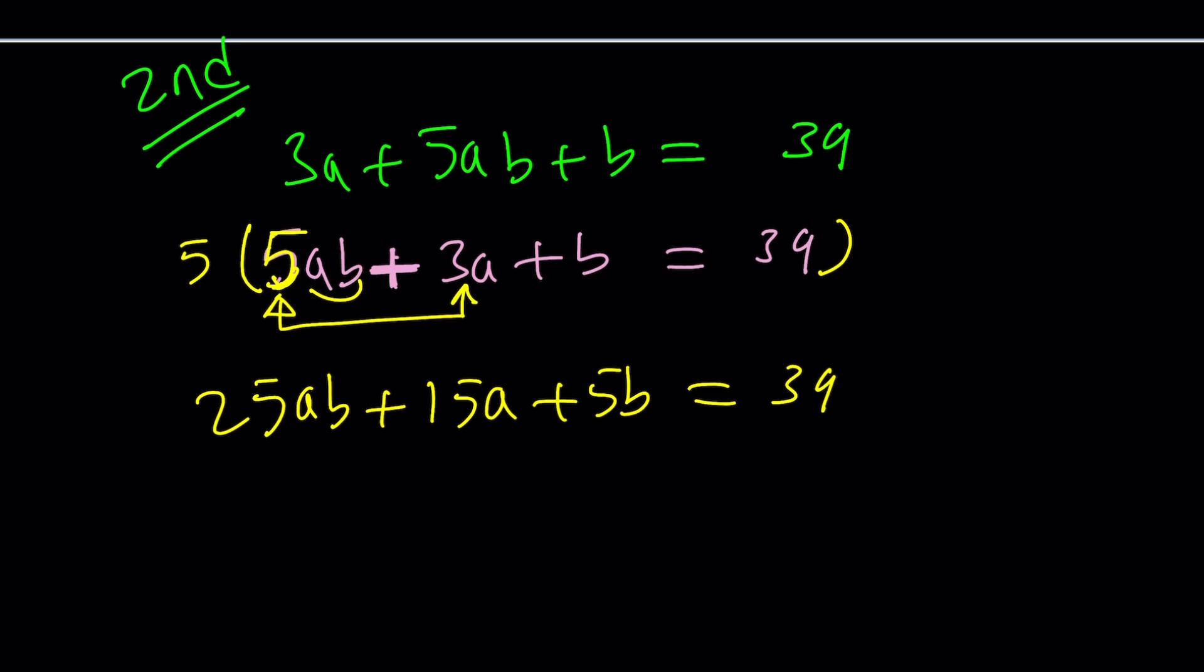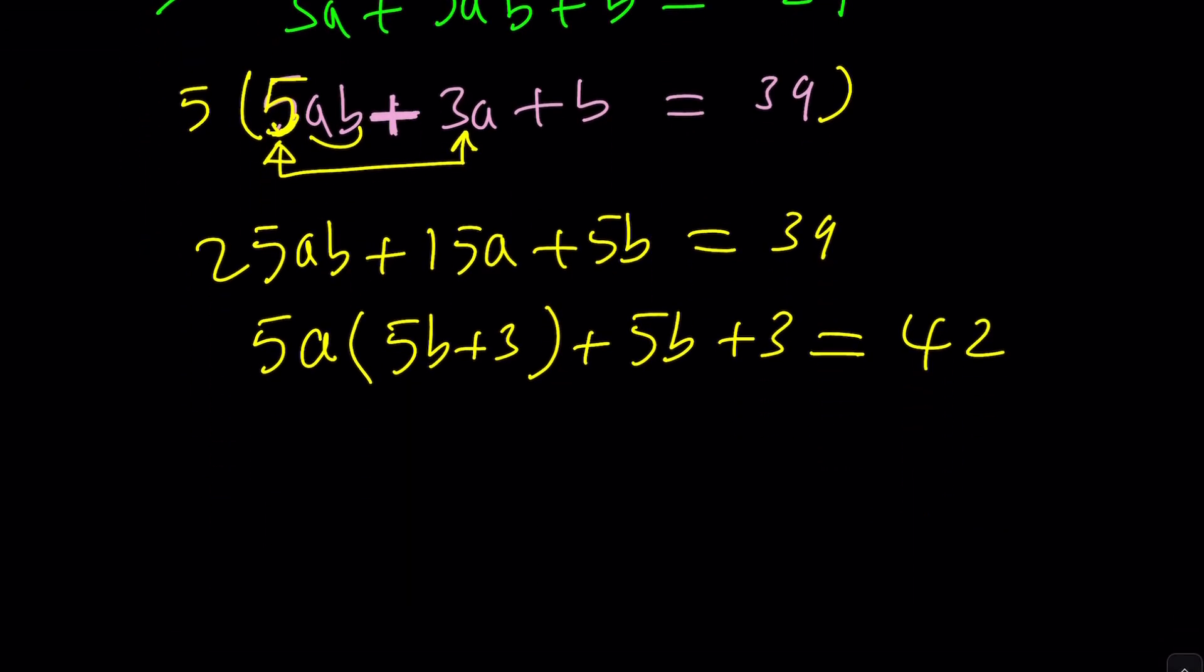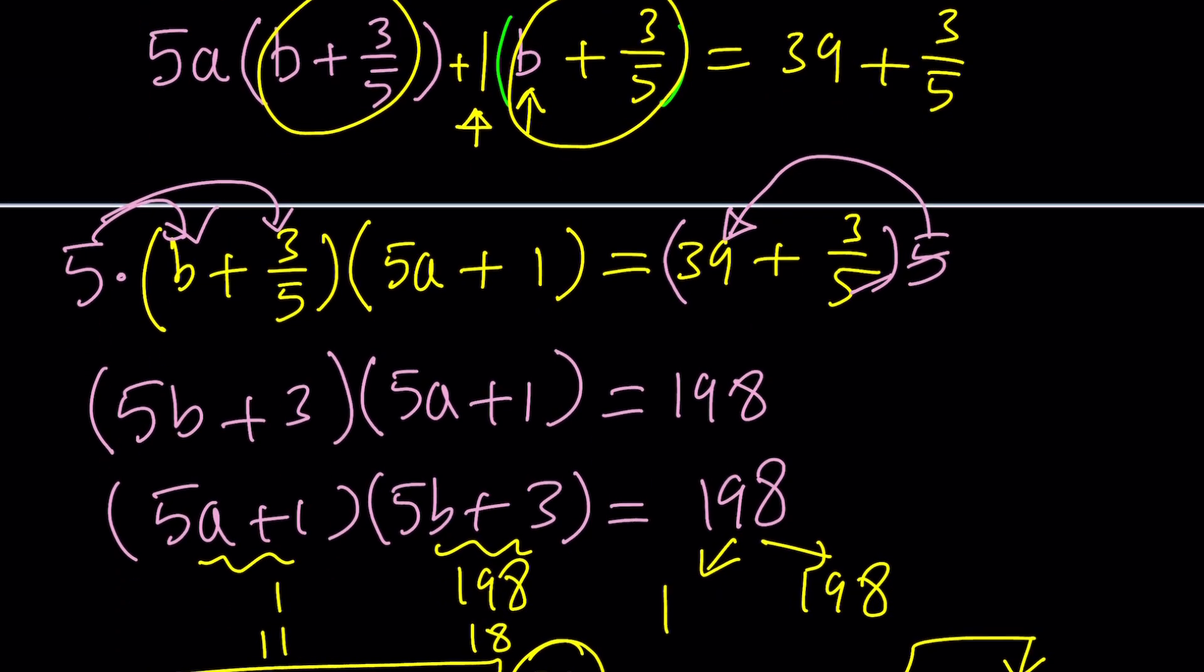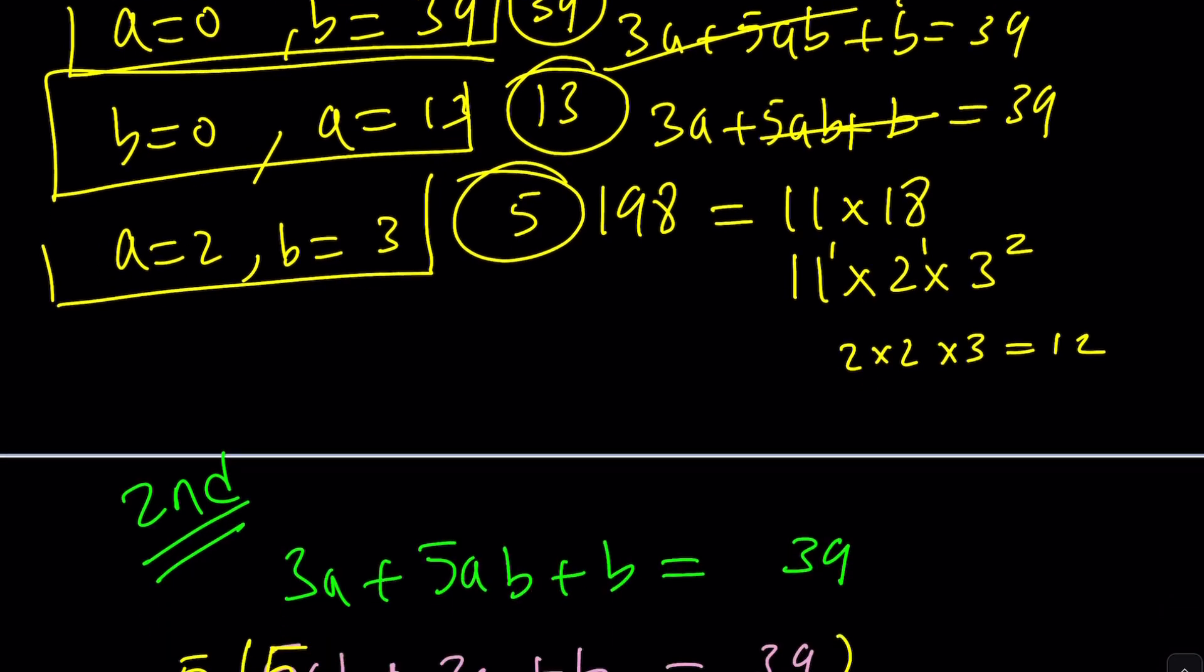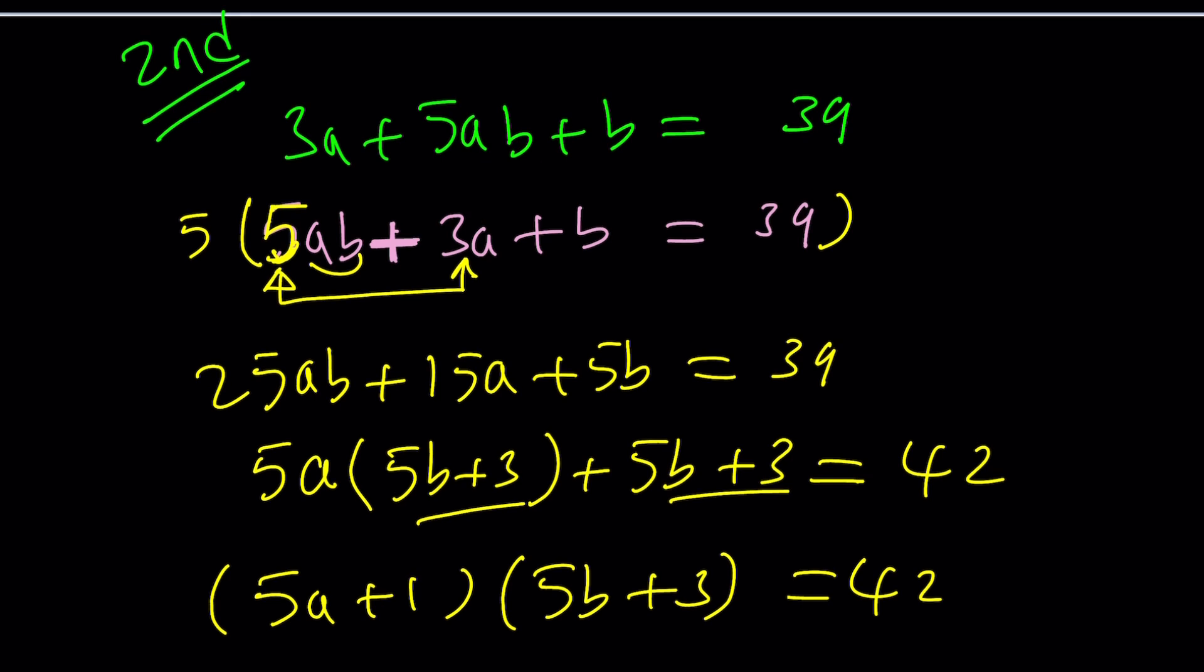So like 25ab plus 15a plus 5b equals 39. Now you can go ahead and factor out a 5a, because they both have it, and inside you're going to have 5b plus 3, and then you have 5b plus 3, and that'll just equal... Wait a minute, did I not add? Why am I getting different answers? That should be the same. Because when I take this out, it's going to be 5a plus 1 times 5b plus 3 equals 42. We added 3 to both sides. But here we added... let's find out. We added 3 fifths, and when we multiplied they gave us 195 plus a 3. I think it'll work. Well why did we get a different number here? That's really weird. Oh yes, because I did not multiply the right-hand side by 5. That's why. My mistake. This is supposed to be 198 as before.